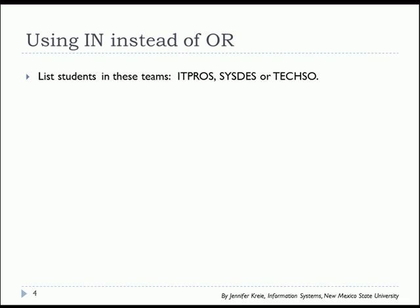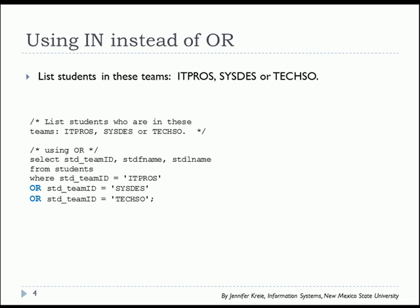Let's get a list of students in these teams: IT pros, sysdes (system designers), and tech solutions. The initial SQL command might look like this — we're selecting columns in the SELECT clause, designating the table in the FROM clause, and in the WHERE clause we want to see team ID if it's IT pros, or if it's sysdes, or if it's TEXO.